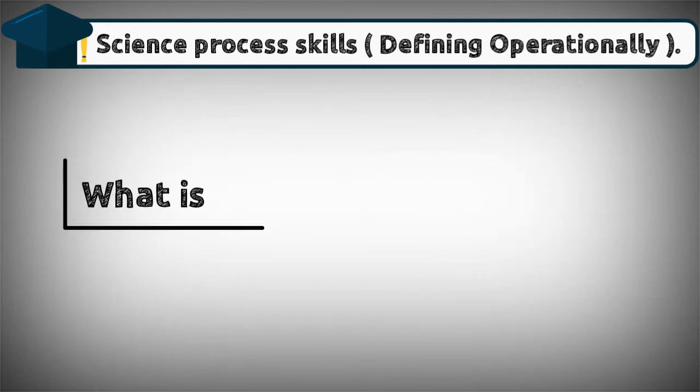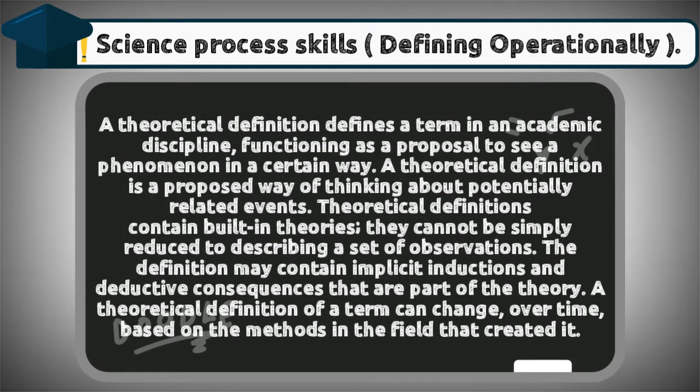What is a theoretical definition? A theoretical definition is a proposed way of thinking about potentially related events. Theoretical definitions contain built-in theories; they cannot be simply reduced to describing a set of observations. The definition may contain implicit inductions and deductive consequences that are part of the theory. A theoretical definition of a term can change over time based on the methods in the field that created it.